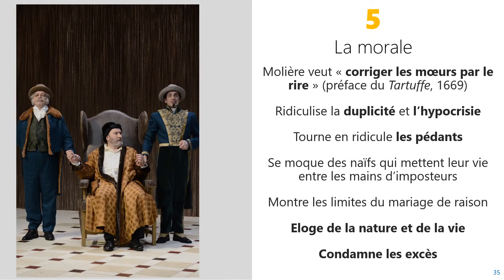Enfin, comme dans toute œuvre classique, Molière transmet une morale philosophique dans le malade imaginaire. Il ne s'agit pas tant de faire la morale que de faire réfléchir. Comme il l'avait écrit dans sa préface au Tartuffe en 1669, Molière veut corriger les mœurs par le rire. Ce projet est typiquement classique. Molière ridiculise les vices des hommes, leur duplicité et leur hypocrisie. Il tourne en ridicule les pédants et se moque des naïfs qui se laissent manipuler par des imposteurs dangereux et malfaisants. Par ailleurs, la comédie-ballet de Molière est une comédie d'intrigue qui montre les limites du mariage de raison au profit du mariage d'amour. La comédie de Molière est une célébration du rire, de la vie, de la nature et de l'amour.